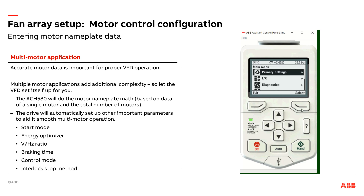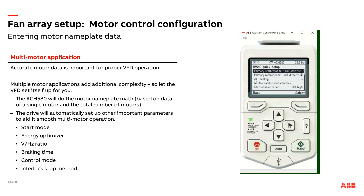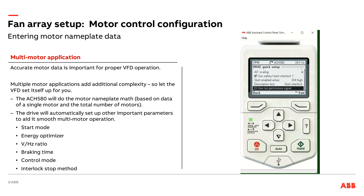I'm going to come into the menu, go to Primary Settings, Set Select. I'm going to go to HVAC Quick Setup — if you've seen enough of my videos you know I love working in the HVAC Quick Setup — it covers most of my needs right in here. I'm going to scroll down to Motor Nominal Values because that's where I enter my motor data.